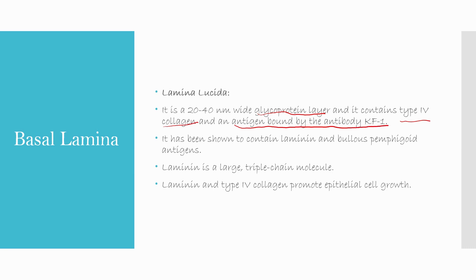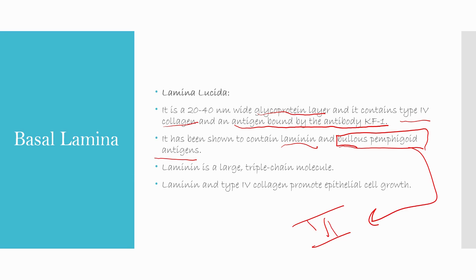The lamina lucida has been shown to contain laminin and bullous pemphigoid antigens — this is very important to remember, because in oral pathology in third year you will need this. Laminin is a large triple-chain molecule. Laminin and type IV collagen promote epithelial cell growth, helping in the regeneration of the epithelium.